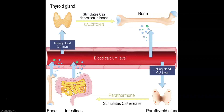Calcium is maintained in the bloodstream by several mechanisms. Starting at the bottom right of the diagram: when blood calcium is decreasing, that stimulates the parathyroid gland to produce parathyroid hormone, which stimulates calcium release from the intestine — absorbing more calcium from the diet — and causes release from the bone, where most of our calcium is stored.